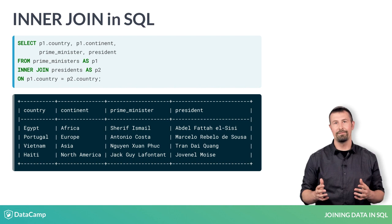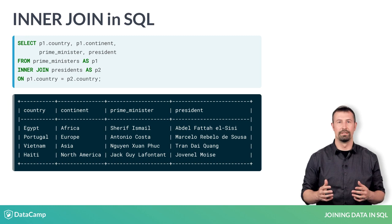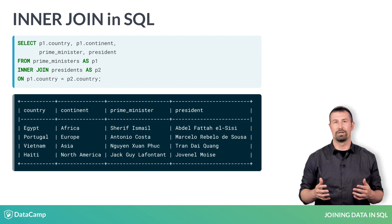Next, we list the table on the left of the inner join after from, and then we list the table on the right after inner join. Lastly, we specify the keys in the two tables that we would like to match on. You'll now practice applying an inner join to two tables and to three tables. Let's get to it.